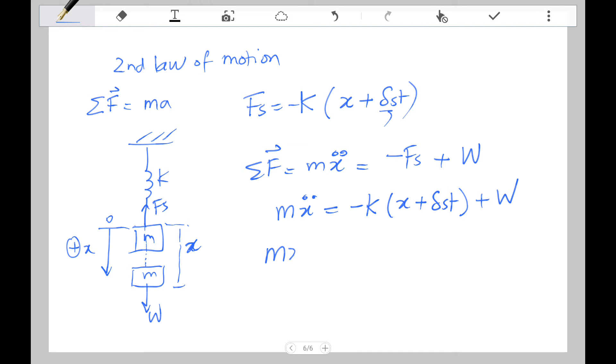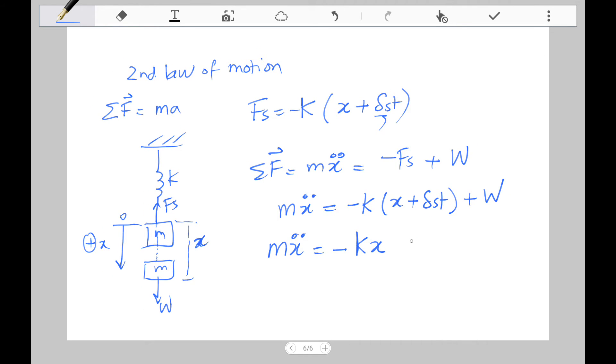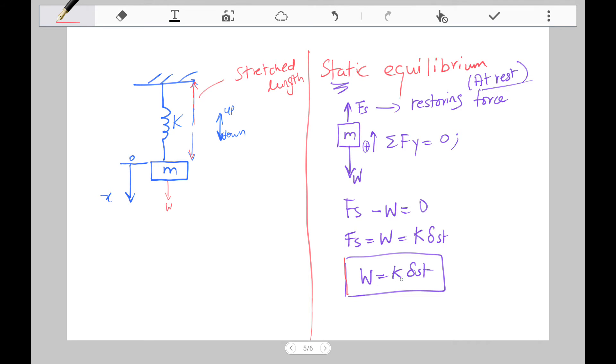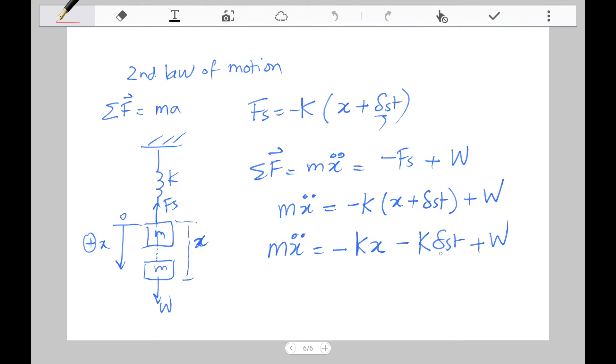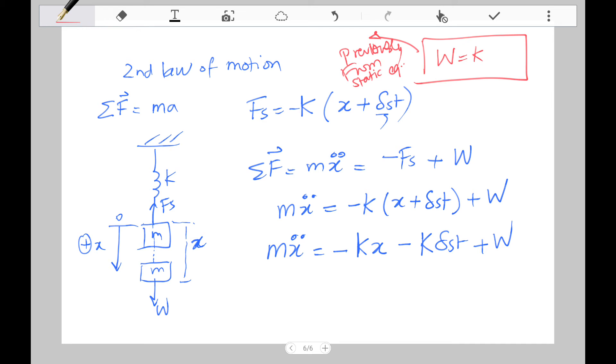Now this is the tricky part. What did we do in step one here? We actually found that the weight is equal to k spring constant times the displacement. So we go back, we take that value and then we throw it in here. So previously from static equilibrium, we know that the weight is equal to k delta st, that's the displacement. And now once we sub that in here, we get minus kx minus w plus w, which is the weight, and that's going to cancel out.